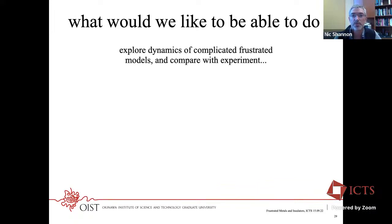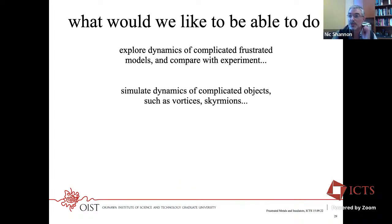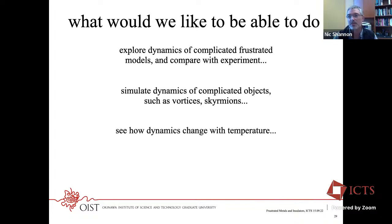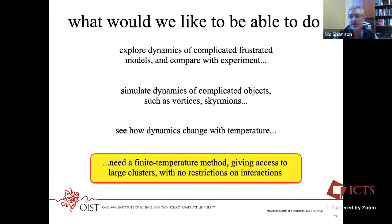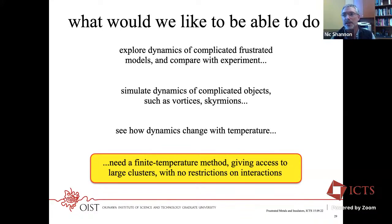What would we like to be able to do? Explore dynamics of complicated, frustrated models and compare with experiments — the pyrochlore, NiGaS. We'd also like to simulate the dynamics of complicated objects like vortices and skyrmions, and see how they change with temperature. We need a finite-temperature method giving access to large clusters with no restrictions on interactions, because these systems have a lot of interactions and waiting for sign-free cases is not a happy strategy.